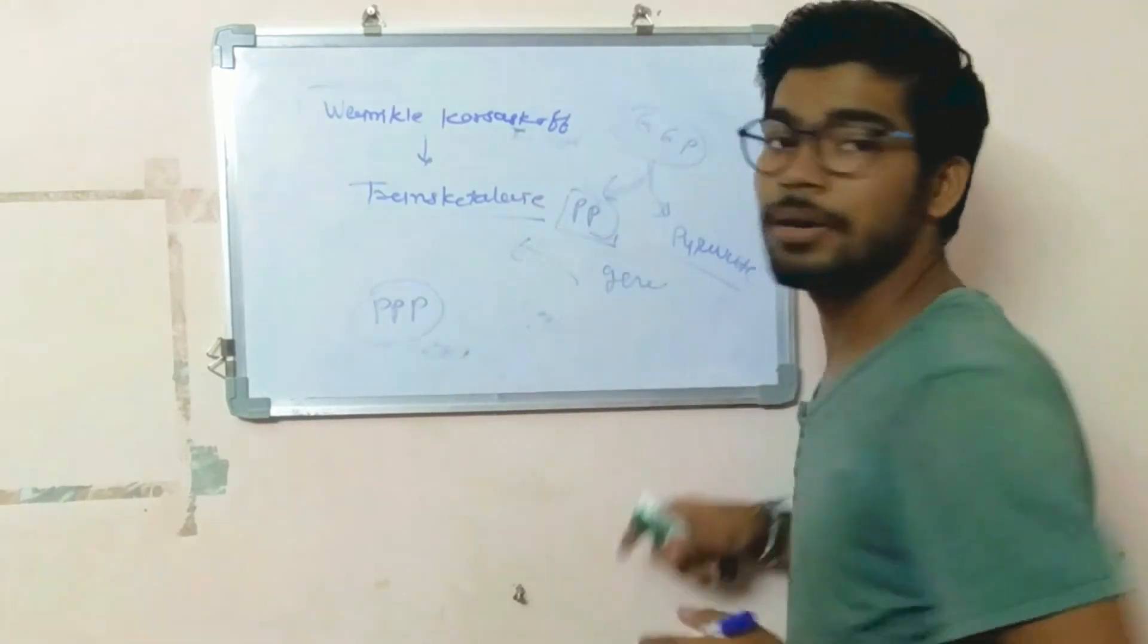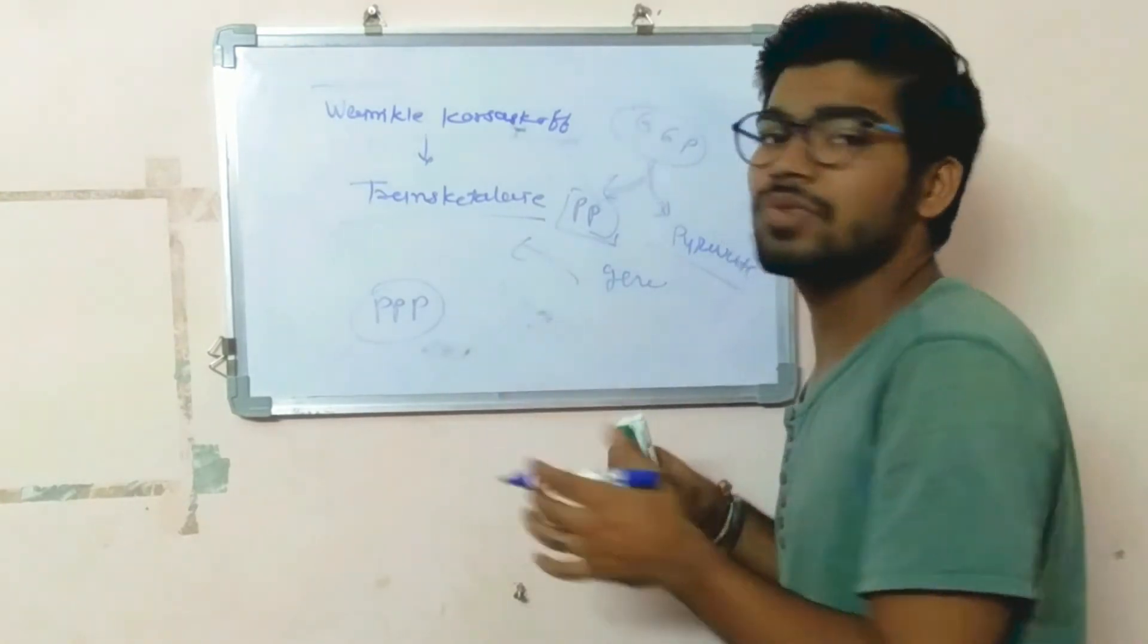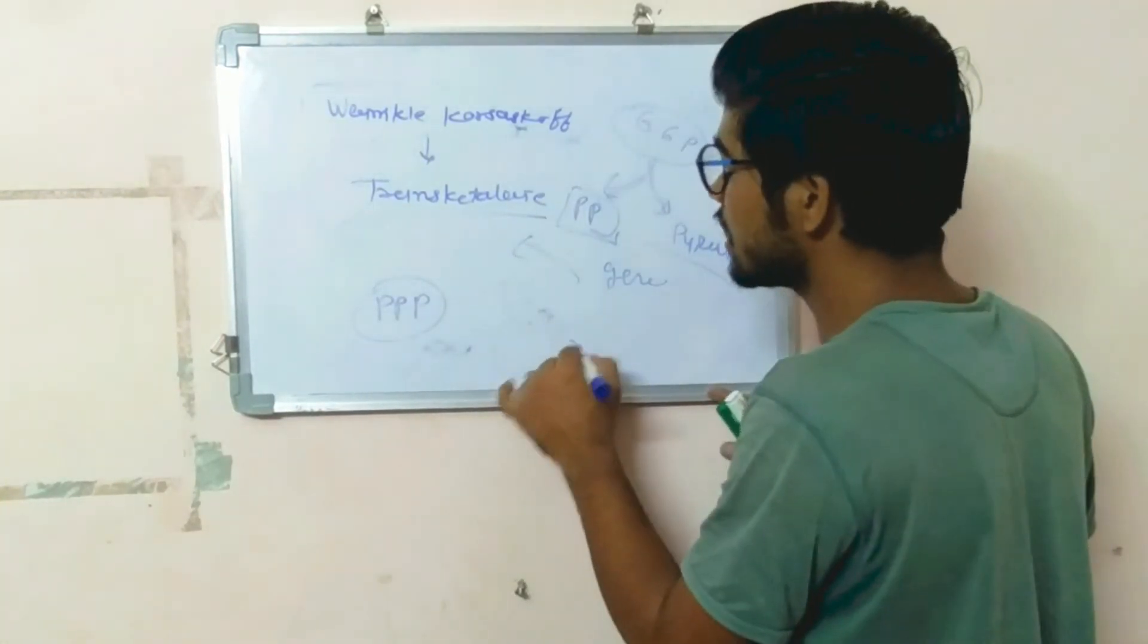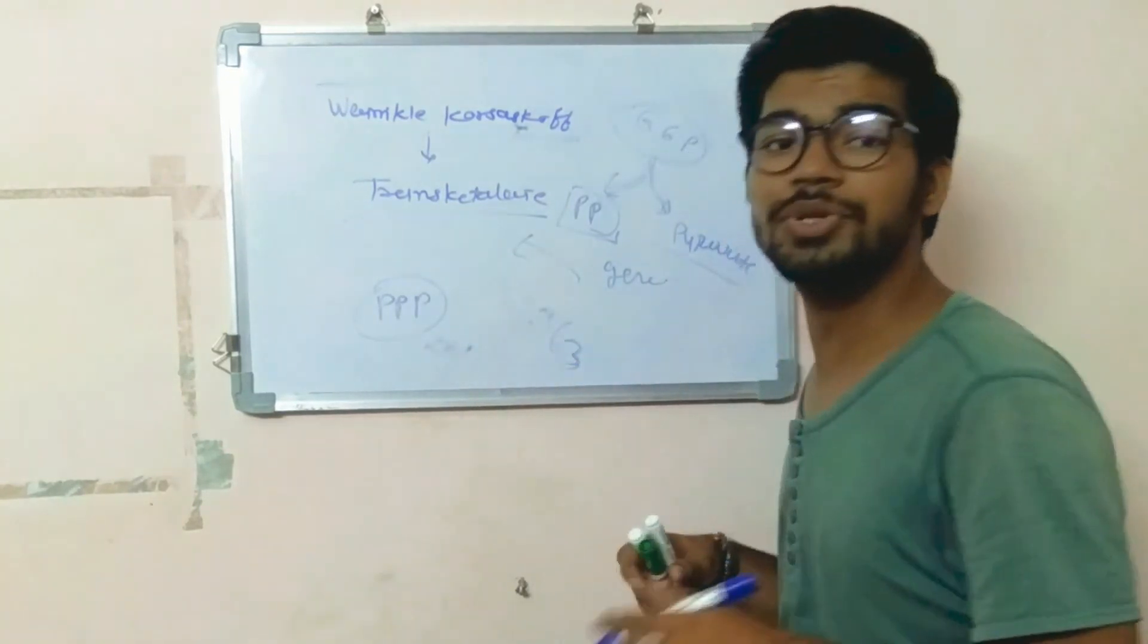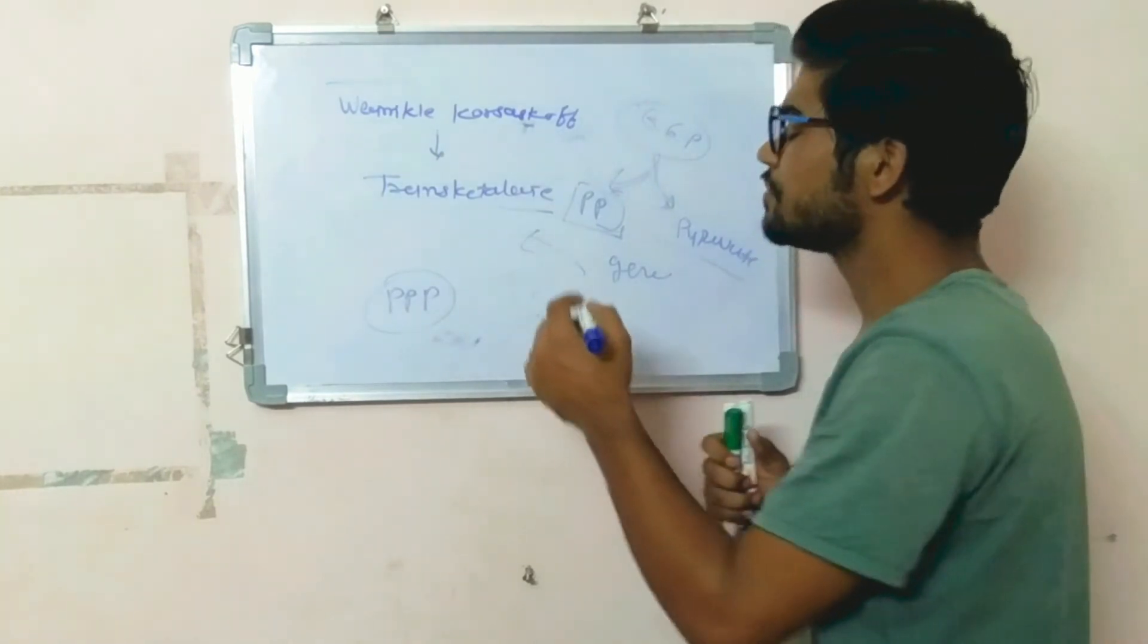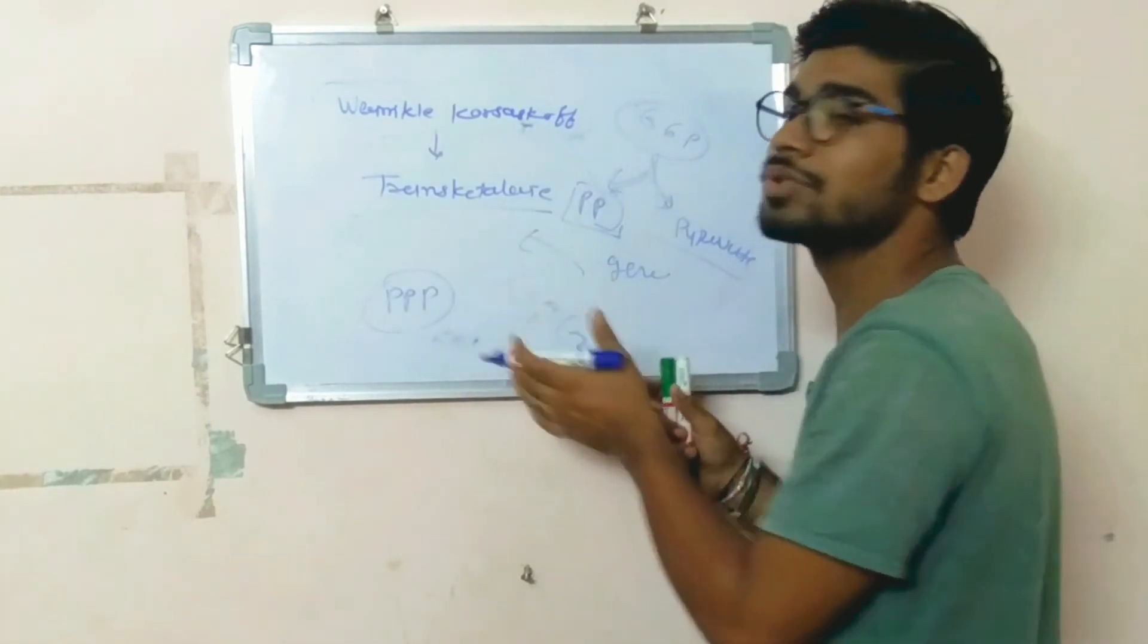The reducing pentose phosphate pathway mostly occurs in plants as the C3 cycle in CO2 assimilation. This is all about the non-oxidative pentose phosphate pathway in which hexose sugar is formed by using pentose phosphate sugar.